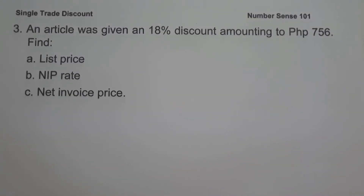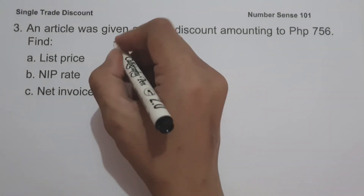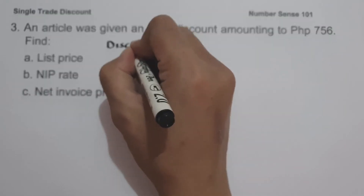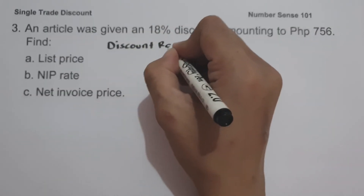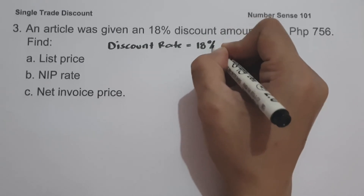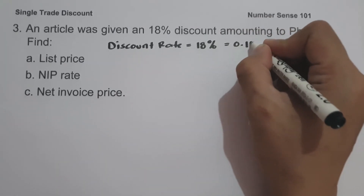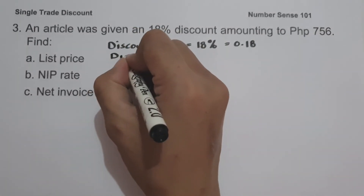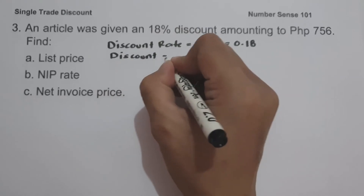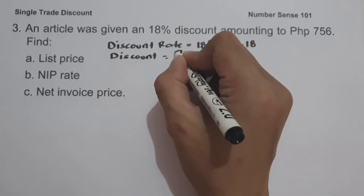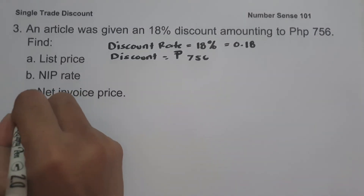For our last example: an article was given an eighteen percent discount amounting to seven hundred fifty-six pesos. Find: letter A, the list price; letter B, the NIP rate; and letter C, the net invoice price. Let us identify our given. The discount rate is eighteen percent, or zero point eighteen in decimal, and the discount is seven hundred fifty-six pesos.